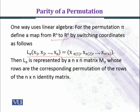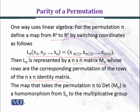Then L_π is represented by an n by n matrix M_π whose rows are the corresponding permutation of the rows of the n by n identity matrix. The map that takes the permutation π to determinant M_π is a homomorphism from Sn to the multiplicative group {1, -1}. And you can see that in the identity matrix when we interchange two rows, a negative sign will come out.